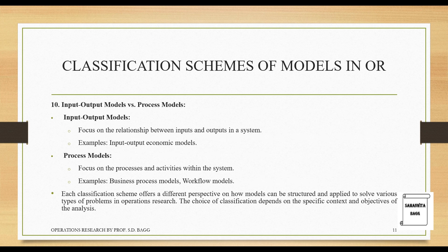Input-output models versus process models: input-output models focus on the relationship between inputs and outputs in a system, for example input-output economic models. Process models focus on the processes and activities within the system, such as business process models and workflow models. In other words, input-output models focus on what goes in and what comes out, while process models focus on what happens in between.